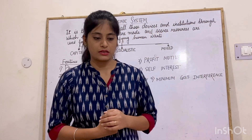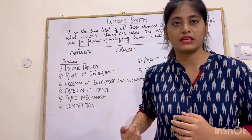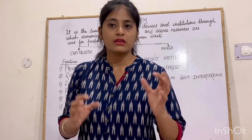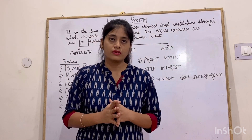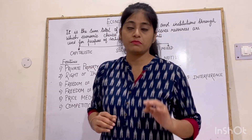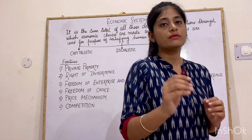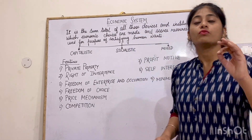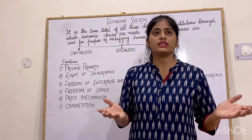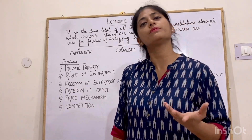From the meaning of capitalistic economy only, you can find out the features of capitalistic economy. A capitalistic economy is an economy where whatever resources are there, there are private individuals who own and use these resources — the owner of these productive resources are private individuals. Whatever they produce, they produce to earn profit. We know the main motive of the private sector is to earn profit.